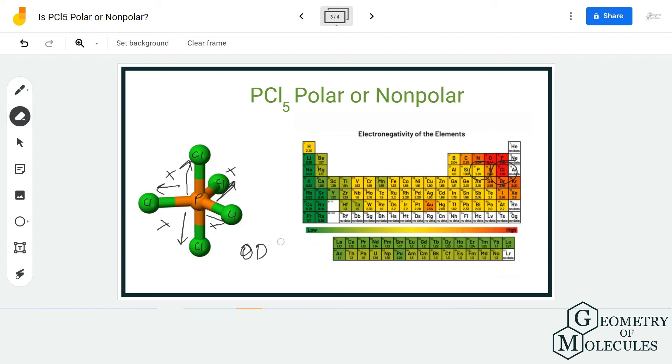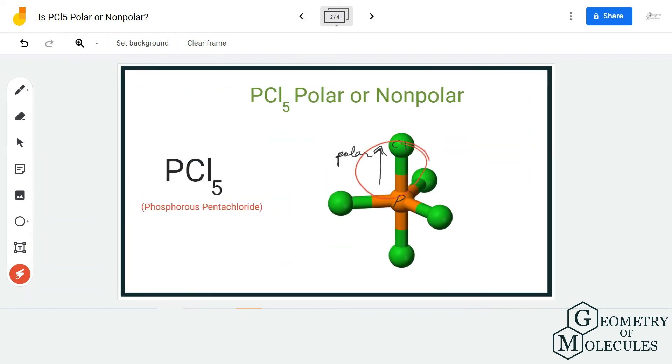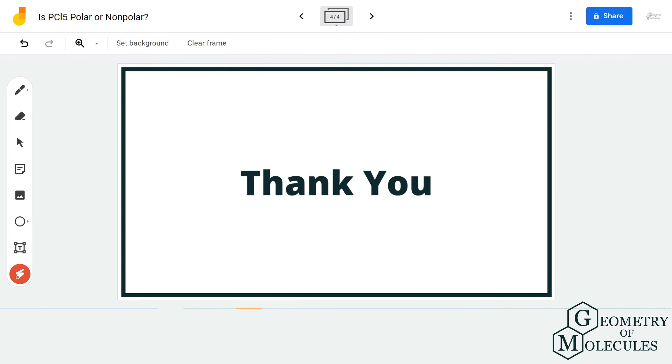This will result in zero net dipole moment for this molecule. As there is zero net dipole moment for this molecule, PCl5 is a non-polar molecule. So although the P-Cl bonds are polar in this molecule, the molecule as a whole is non-polar. I hope this video helps you understand the polarity of PCl5.